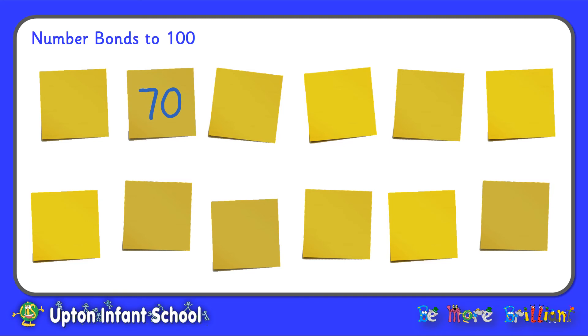I'm going to choose that card there. So that's 70. Now, what am I going to look for here to make 100? Let me try that one. 70 and 40. No, that wouldn't make 100. That makes 110. So those are not number bonds to 100. I'll turn those back over.